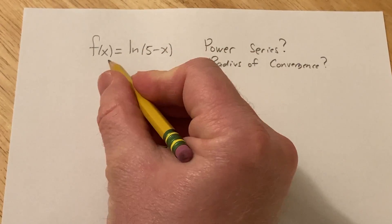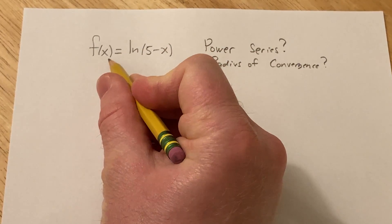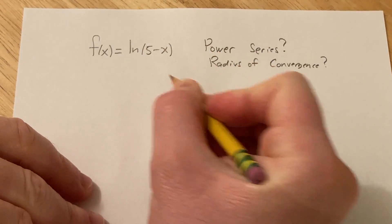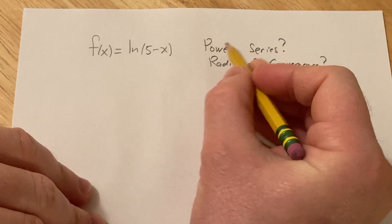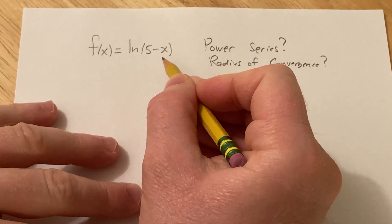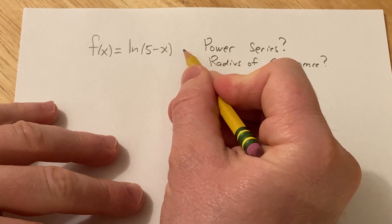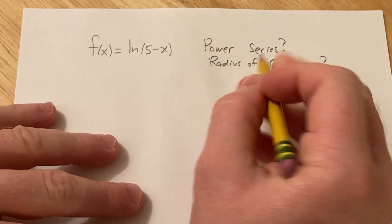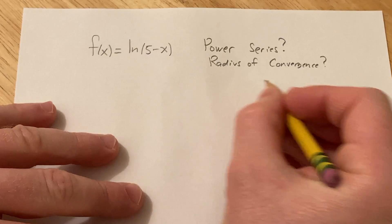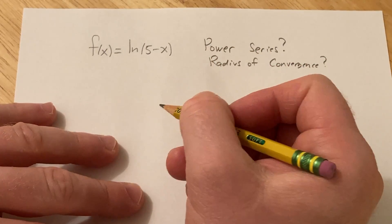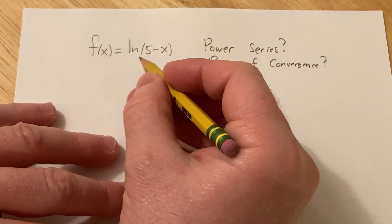Hello, in this problem we have a function f(x) equals the natural log of 5 minus x, and we want to express this function as a power series and find the radius of convergence of this power series.